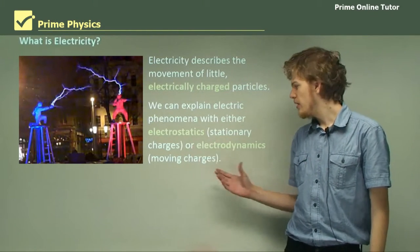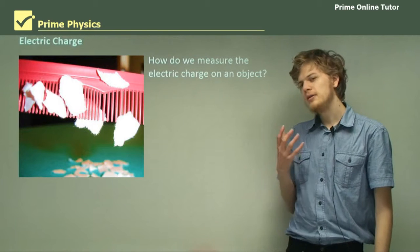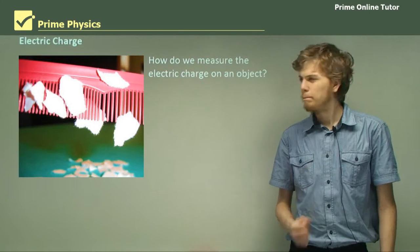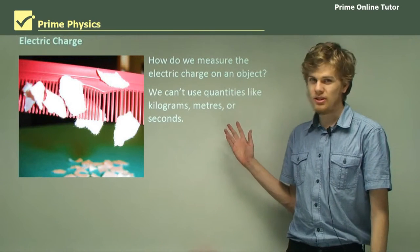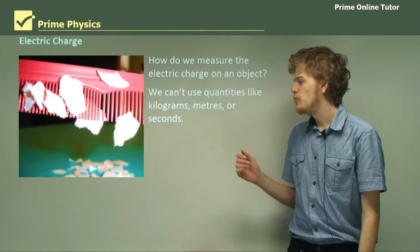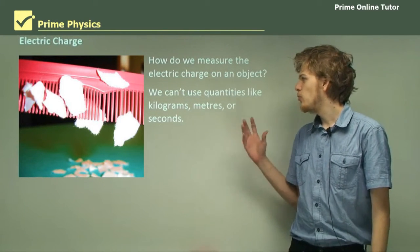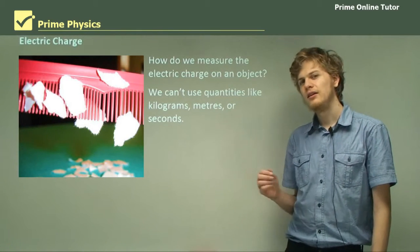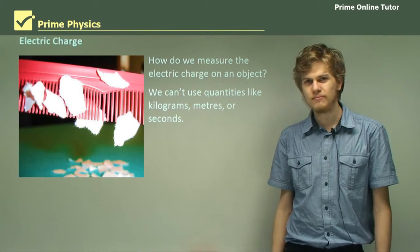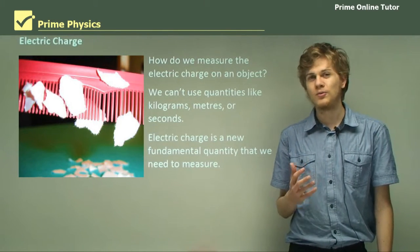Static means stationary and dynamic means moving. So how exactly do we measure electric charge? It might be a bit of a tricky one. We can't use kilograms, meters, or seconds. We can't say something like 'this plastic comb has two kilograms of electric charge on it' — it wouldn't make sense. The comb already has a mass, a length, and it's already existing for a number of seconds. So we're going to need a new unit to measure this fundamental quantity of electric charge.